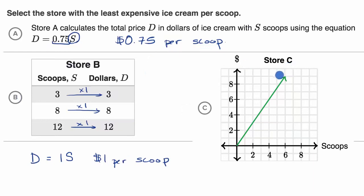So here this relationship is described with a graph, but we can put it in the same forms that we saw before. So for store C, let me make a little table here with scoops and dollars. Let's see, when I get two scoops it looks like, and I'm just picking values where it looks like I can read the graph easily, two scoops looks like $3. Four scoops, it is $6.